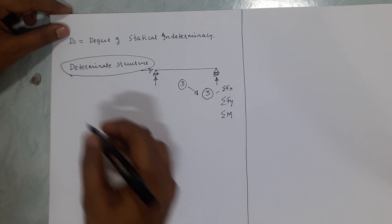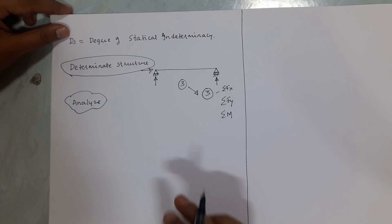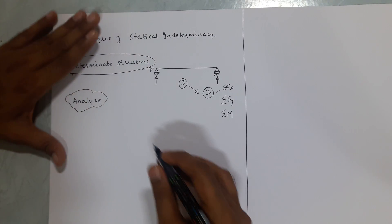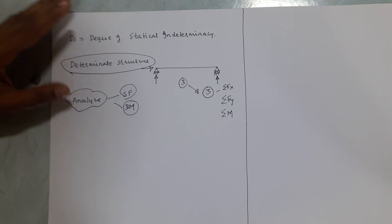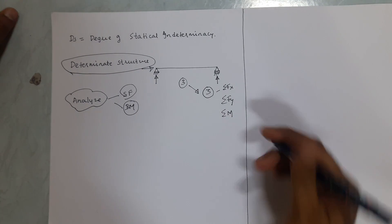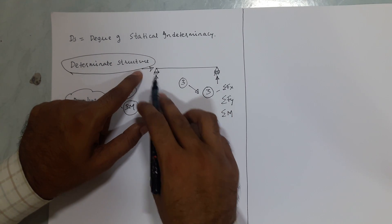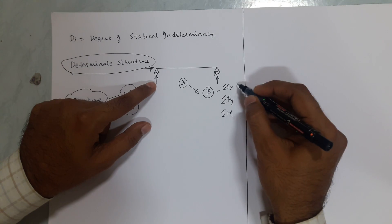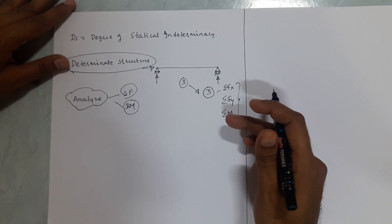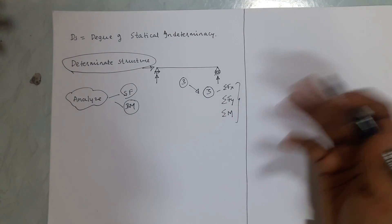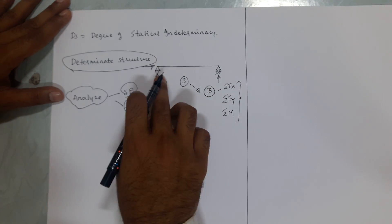We can also define it as: a structure that can be analyzed by just using equations of equilibrium. Analysis means we need to find shear force and bending moment. Once you know the reactions, you can find the shear force and bending moment using only the equations of equilibrium.